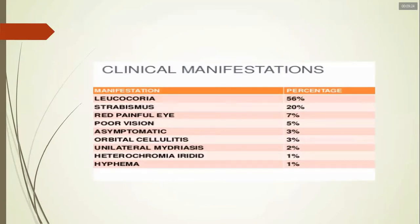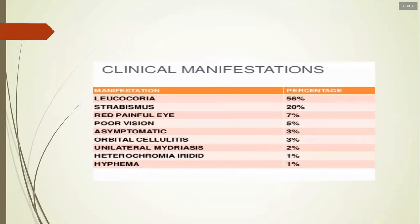The clinical manifestations or features that bring a child to clinical attention include: leukocoria (60%), strabismus (20%), red painful eye (7%), poor vision (5%), asymptomatic (3%), orbital cellulitis (3%), unilateral mydriasis (2%), heterochromia iridis (1%), and hyphema (1%). These are the signs and symptoms observed by parents or guardians.